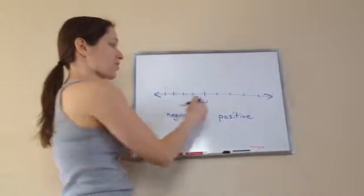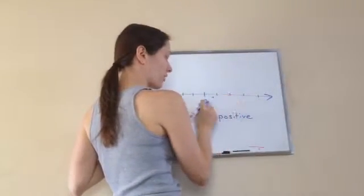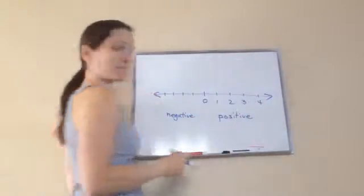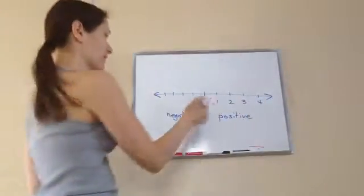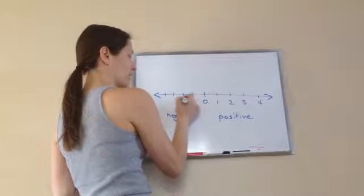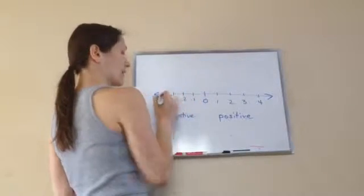Let's write our positive numbers starting with zero. We'll go one, two, three, four. Now the left side you still start at zero and you're going backwards so we're going negative one, negative two, negative three, and negative four.